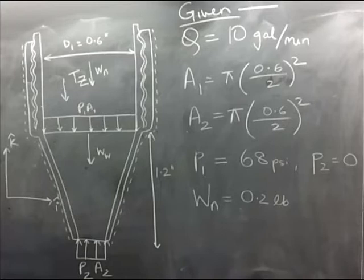Determine the anchoring force required to hold in place the conical nozzle attached to the end of the laboratory sink faucet shown in figure 5.31 when the water flow rate is 10 gallons per minute. The nozzle weight is 0.2 pounds. The nozzle inlet and exit inside diameters are 0.6 and 0.2 inches respectively. The nozzle axis is vertical and the axial distance between sections 1 and 2 is 1.2 inches. The pressure at section 1 is 68 pounds per square inch.